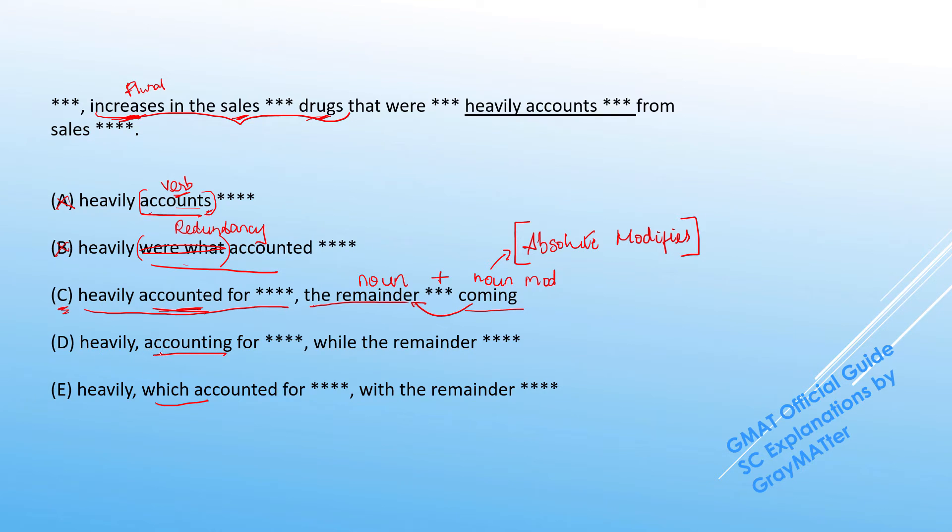Now in D and E, instead of 'accounted,' we have 'comma accounting' and 'which accounted.' Now if I say 'comma accounting,' this is a present participle modifier, and if I say 'which accounted,' this becomes a relative clause.